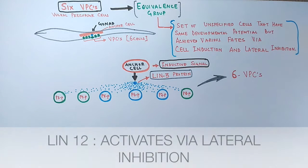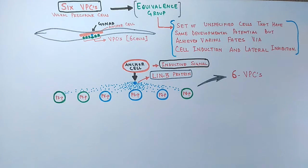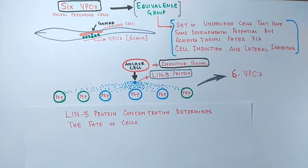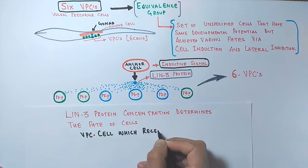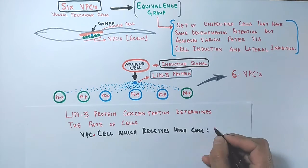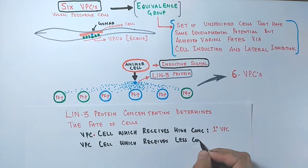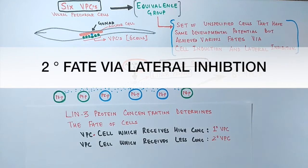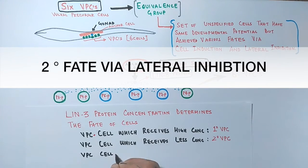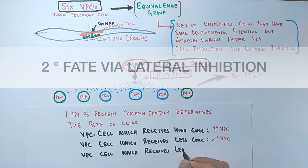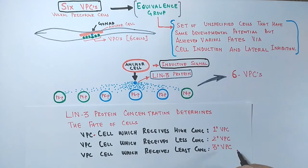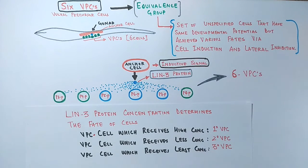It must be noted that not only LIN-3 contributes to cell fate. C. elegans has another signaling molecule called LIN-12, which also contributes to cell fate via lateral inhibition, which we will see later. VPCs that receive the highest concentration of LIN-3 adopt the 1° (one degree) precursor cell fate. VPCs receiving less concentration adopt the 2° fate, while VPCs receiving negligible or no LIN-3 adopt the 3° cell fate.